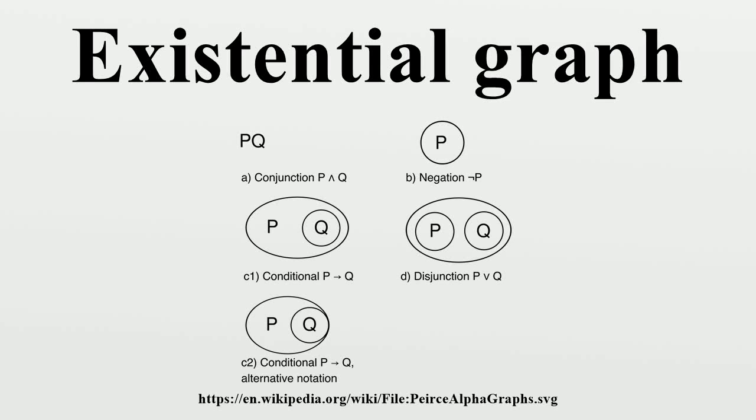An existential graph is a type of diagrammatic or visual notation for logical expressions, proposed by Charles Sanders Peirce, who wrote on graphical logic as early as 1882, and continued to develop the method until his death in 1914.